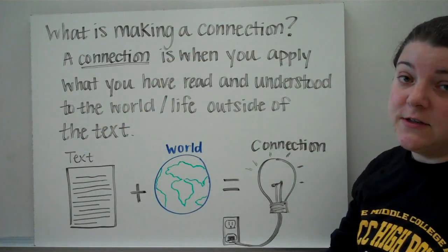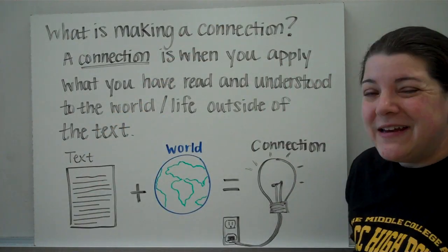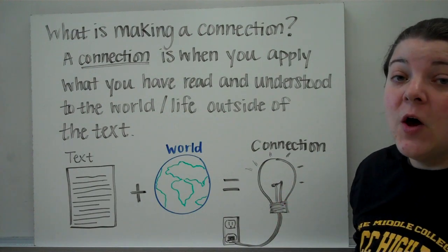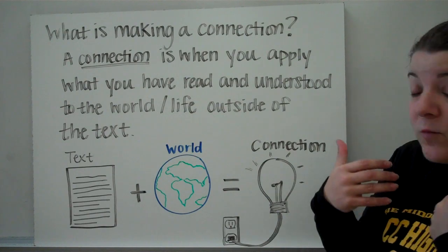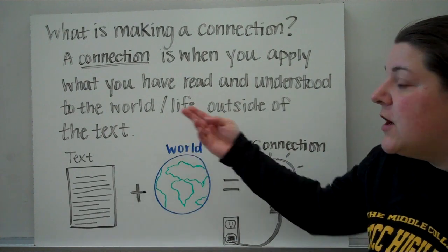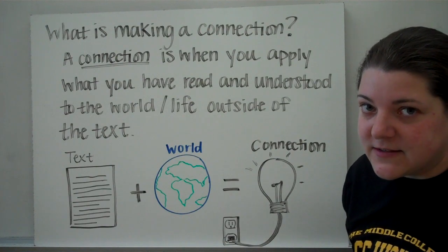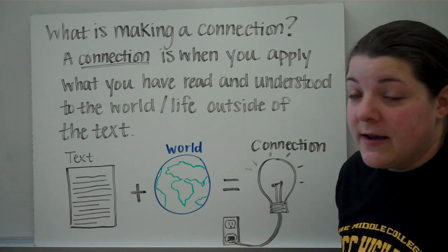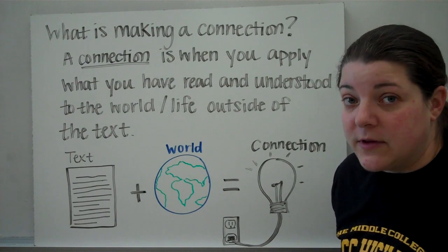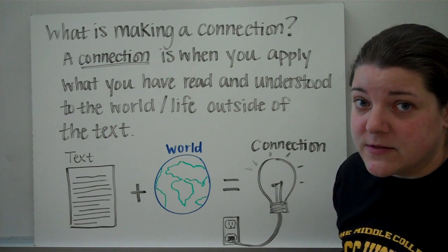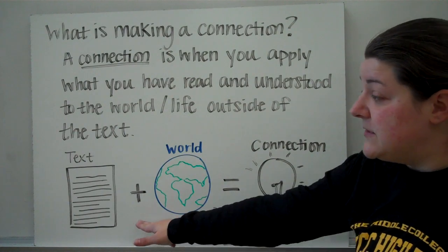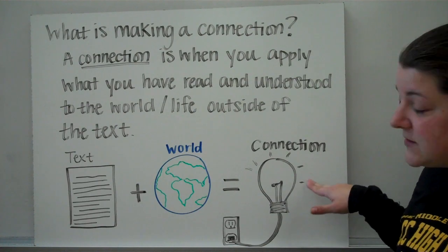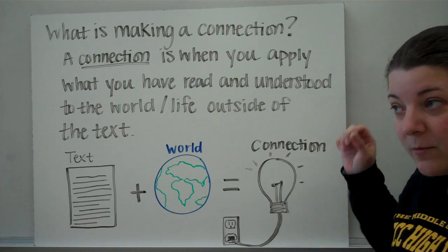So the first question is: what is making a connection? A connection is when you apply what you have read and understood from a text to the world or life outside of the text. Life is not just about the stories, novels, or magazine articles we've read. So what we want to do is take the text plus our view of the world and connect it so that we end up with a lit light bulb.